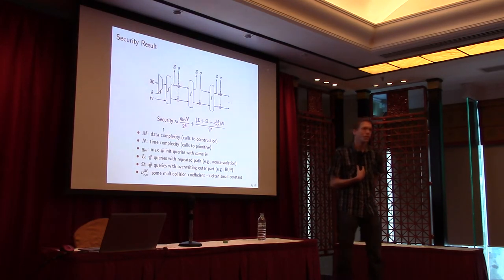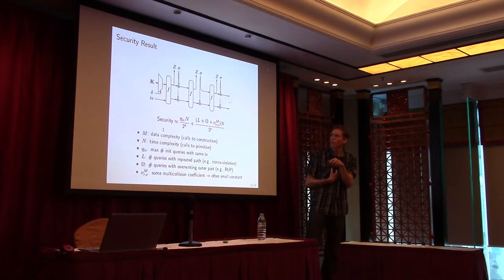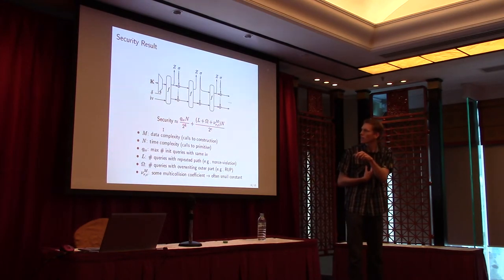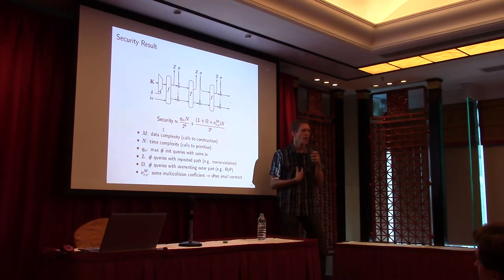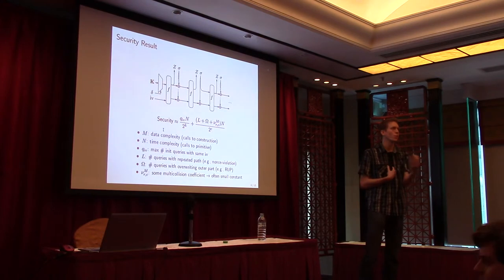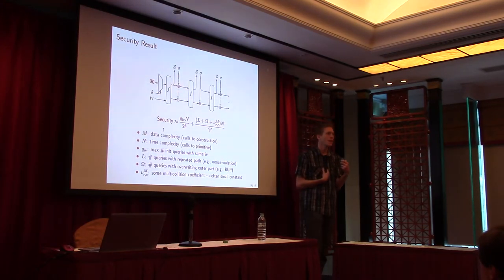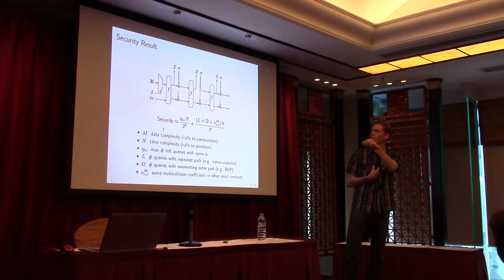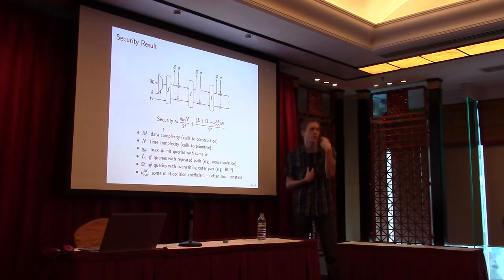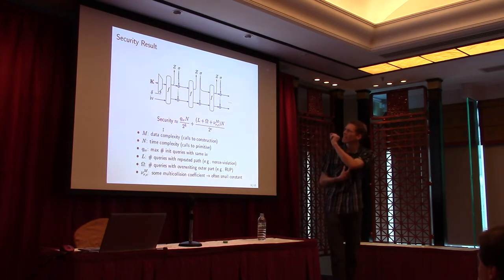We derive the following security bound. It looks more complex because it covers many more adversaries. We have qiv times N over 2 to the K, where qiv is the maximum number of initialization queries for the same IV. Recall that in the old bound we had mu times N over 2 to the K where mu is at most M. Now qiv is upper bounded by the number of keys U in the key array. In the single-key setting, qiv is at most one, giving N over 2 to the K rather than mu times N over 2 to the K.